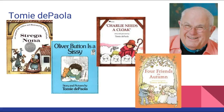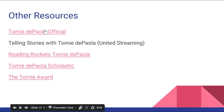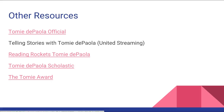Our next person is Tommy DePaola, who you're probably very familiar with. Charlie Needs a Cloak is one of his books with lots of economic concepts in it, as well as his Strega Nona series. There are a lot of great digital resources for Tommy DePaola, and a bunch of his videos are on United Streaming under the title Telling Stories with Tommy. There are also some websites and video links, and there's the Tommy Award, which is given to an illustrator each year — the winner is determined by Tommy DePaola himself.